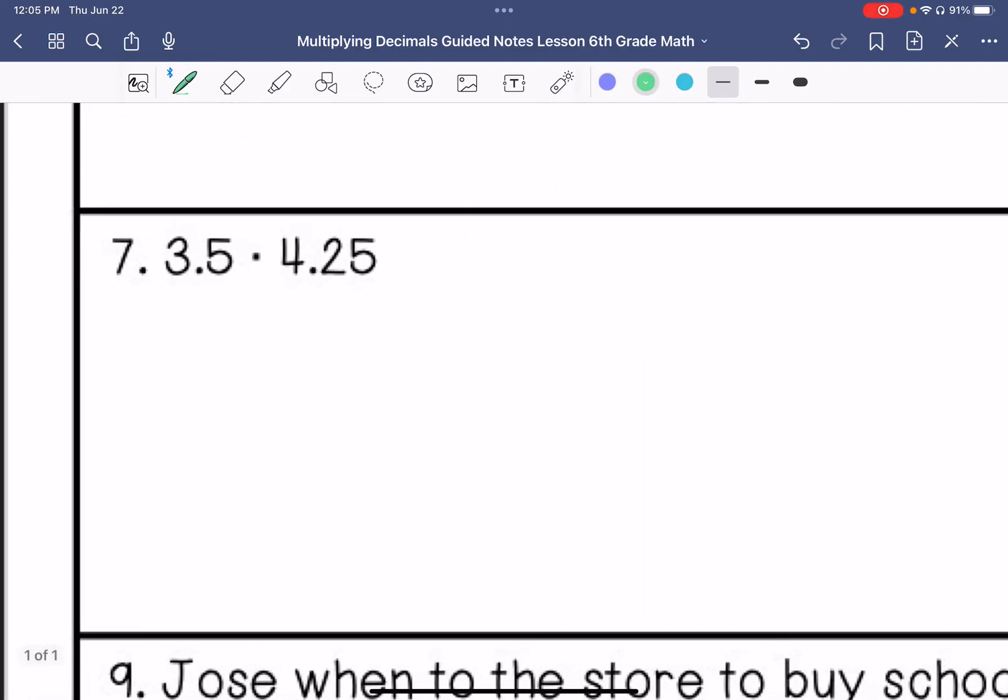Alright, number 7. 4.25 times 3.5. 5 times 5 is 25. 5 times 2 is 10. Plus that 2 is 12. 5 times 4 is 20. Plus that 1 is 21. 3 times 5 is 15. 3 times 2 is 6. Plus that 1 is 7. And then 3 times 4 is 12. We are going to add these. And then we have 1, 2, 3. So 1, 2, 3. So this would be 14.875.